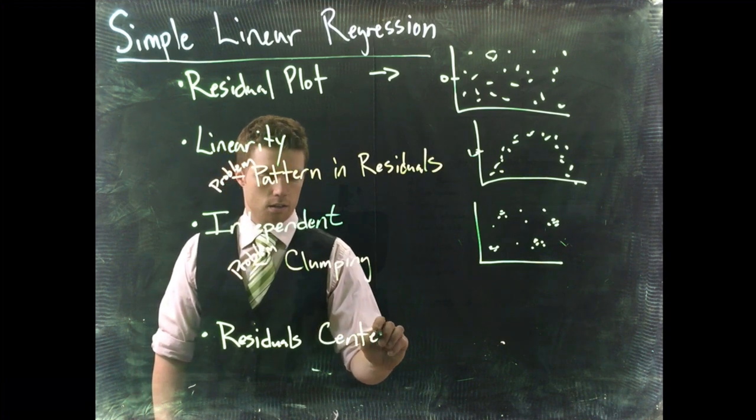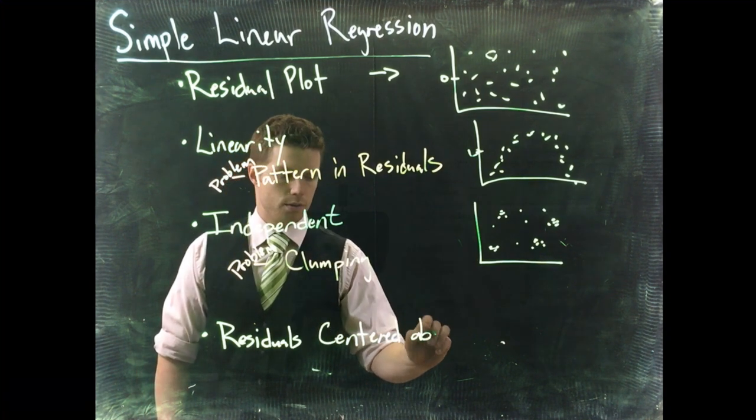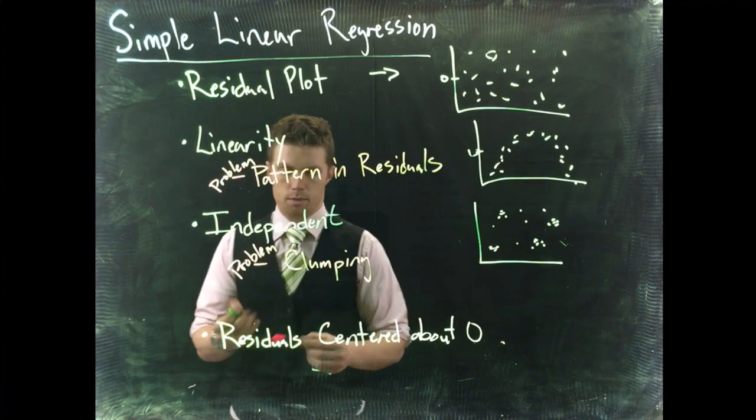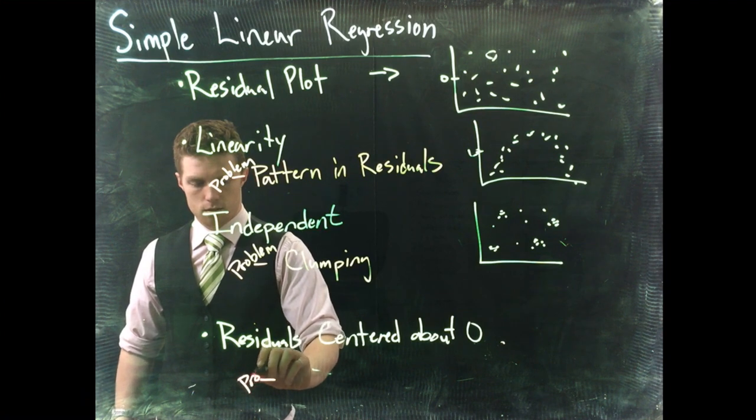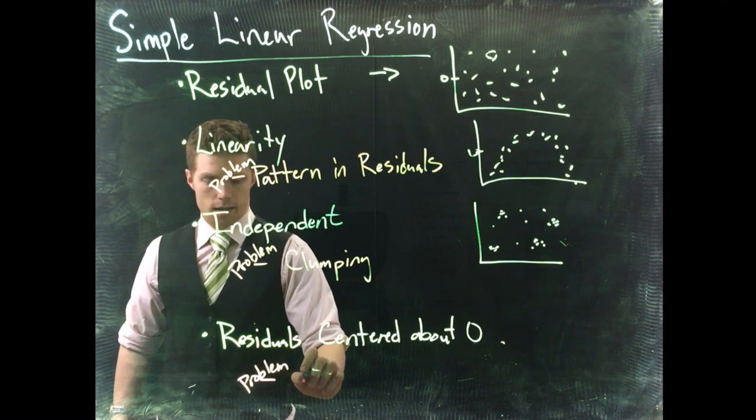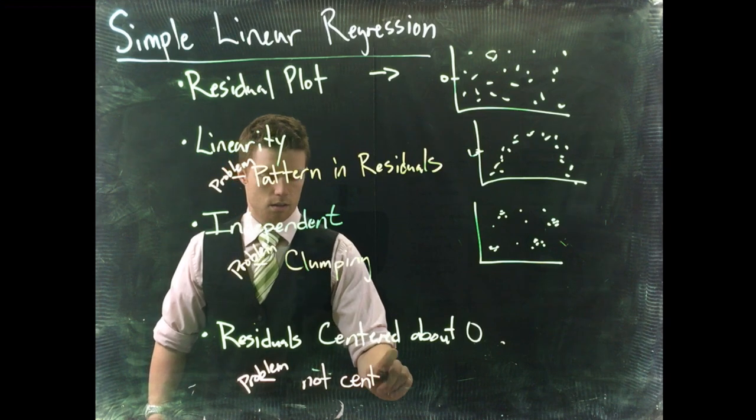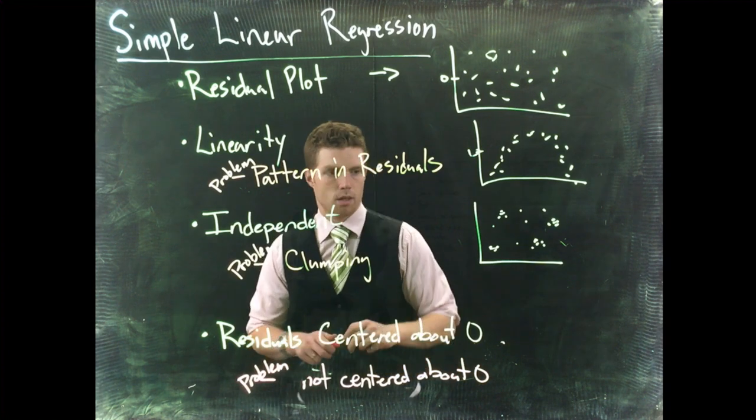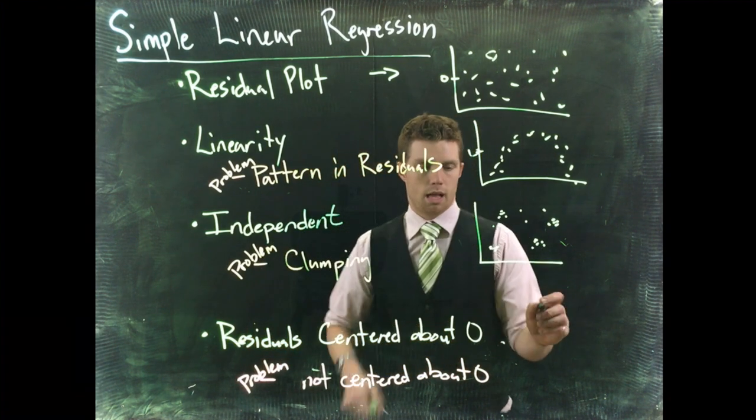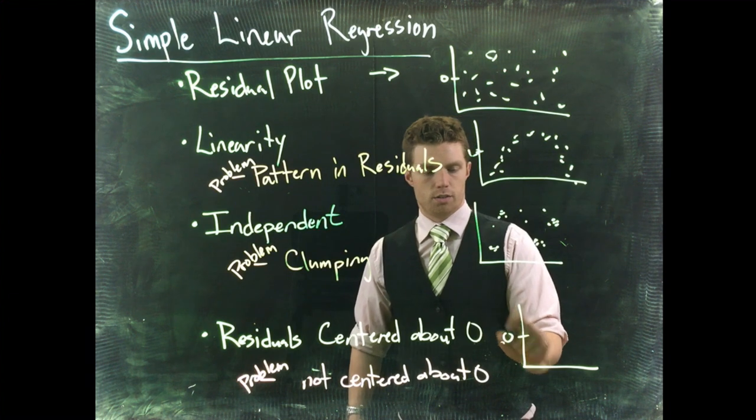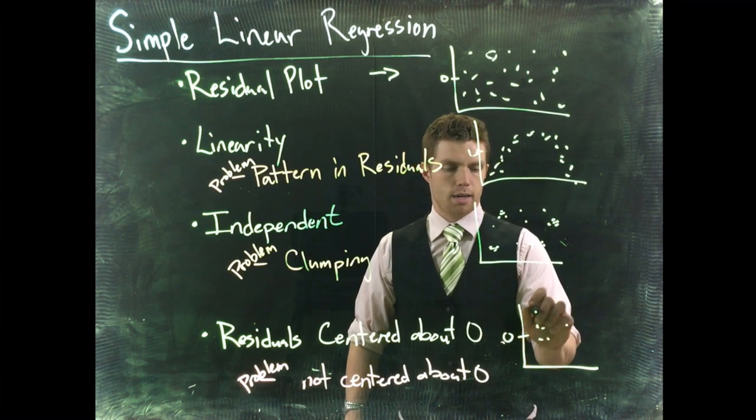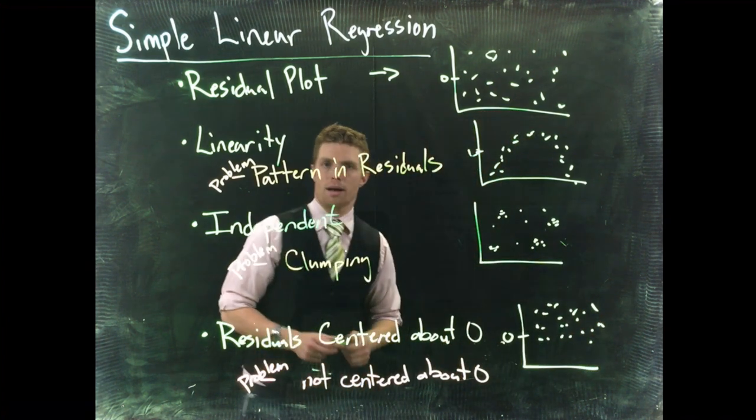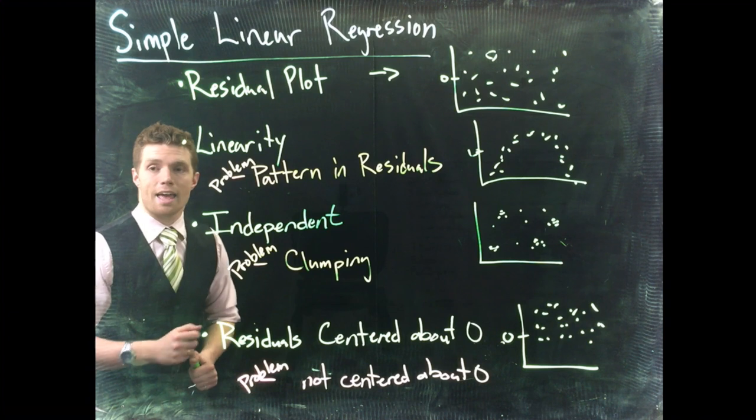Our problem is obviously going to be not centered about zero. We'll have a residual plot that looks something like this. We've got a zero line and the plot might look good, but the data isn't centered about the zero line. If we get this problem we once again have a problem with our model and we should probably go back and correct it.